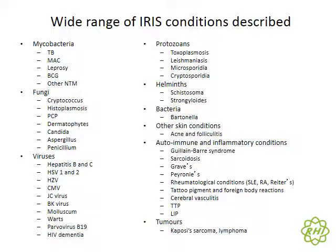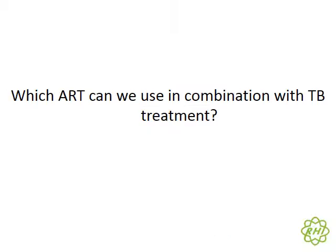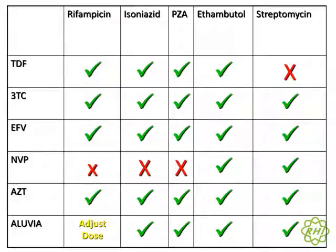This slide shows the wide range of IRIS conditions that have been described — almost every opportunistic infection a patient can get can also potentially IRIS. Regarding which ART can be used in combination with TB treatment, fortunately most ARVs can be used quite safely. The only exception is nevirapine due to hepatotoxicity, and streptomycin, amikacin, and kanamycin cannot be used without tenofovir.